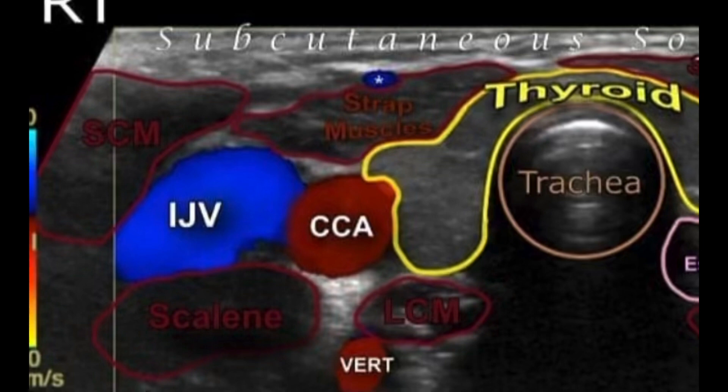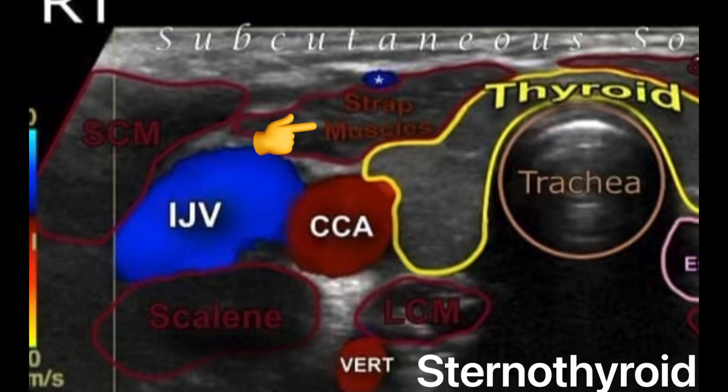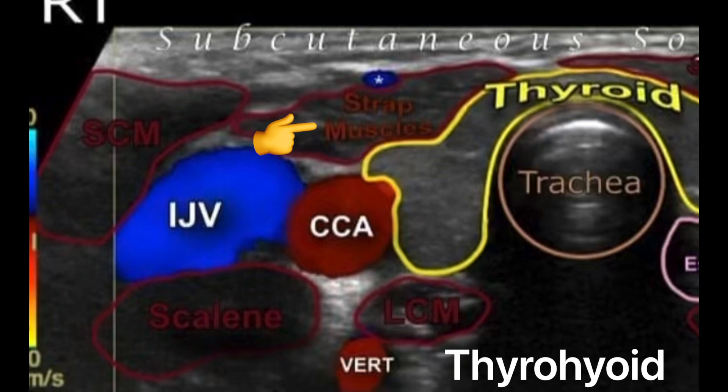Now let's go over the muscles. Right anterior to the right thyroid lobe, you have the strap muscles, which is a group of infrahyoid muscles. The names are sternohyoid, sternothyroid, thyrohyoid, and omohyoid muscles.